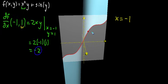And now when we take the partial derivative, we're going to interpret it as the slope of this resulting curve. So that slope ends up looking like this. That's our blue line.